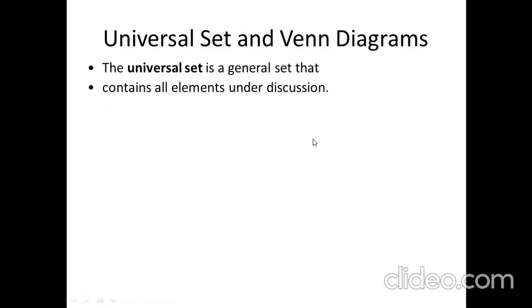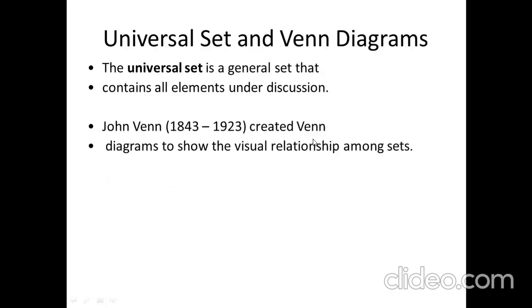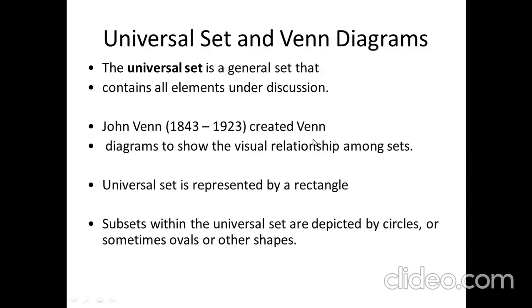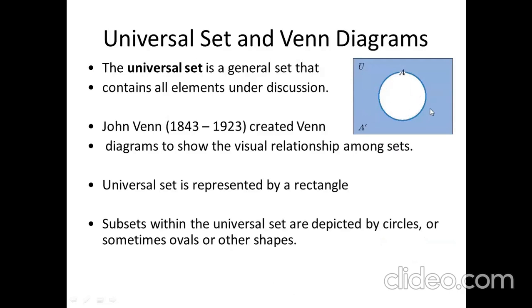After discussing these relationships, let us now look at how to draw Venn diagrams to show these relationships. The universal set is a general set that contains all elements under discussion. John Venn created Venn diagrams to show the visual relationship among sets. The universal set is represented by a rectangle, and the subsets within the universal set are depicted by circles or sometimes ovals. The sets under discussion are subsets of the universal set and are drawn inside the rectangle. This shows that A is a subset of the universal set.